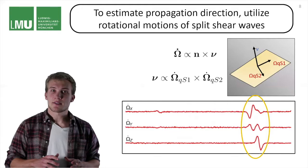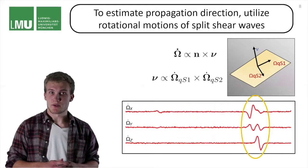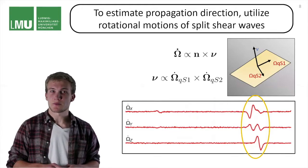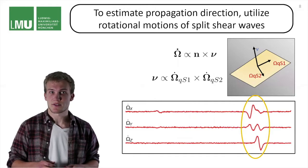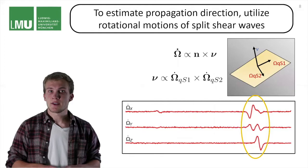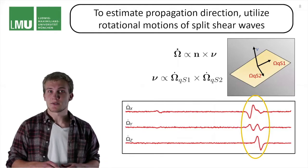So this is a rather nice feature of rotational motions. However, you may have noticed that we use shear wave splitting, which is an anisotropic effect. In isotropy you could probably go ahead and do it with other waves, for example using the polarization of the P wave to find the propagation direction.